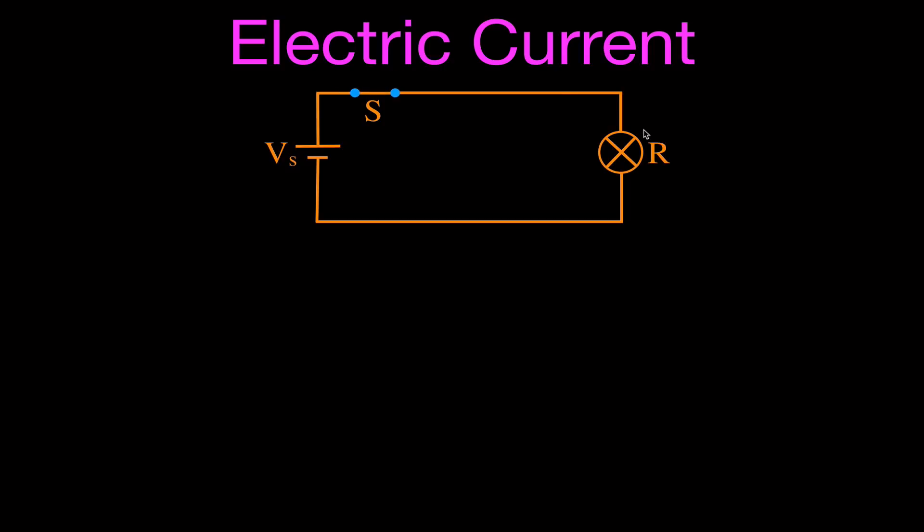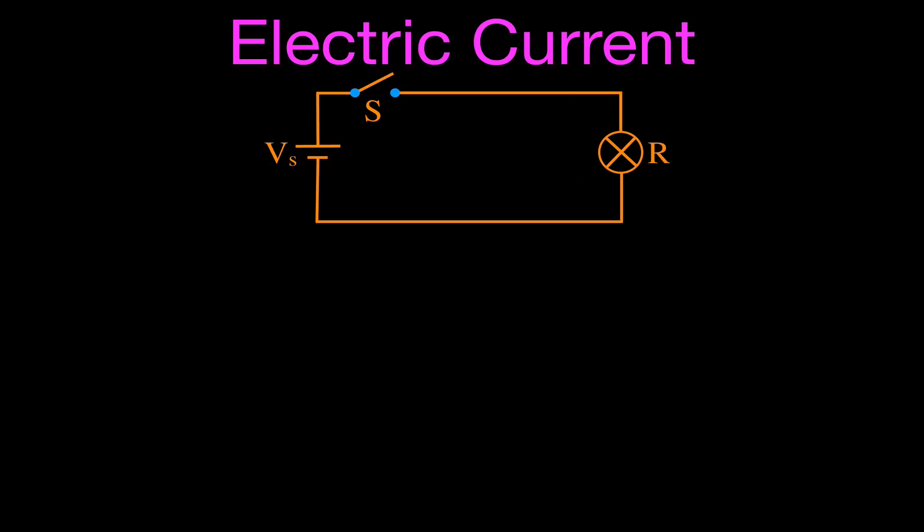If we close the switch, then we have a closed circuit, and the current can immediately start flowing through that circuit, and the light bulb will light up just like that. Open the switch — no current, no light bulb. Close the switch, and the light bulb turns on. That is the result of that electric current flowing through that circuit.